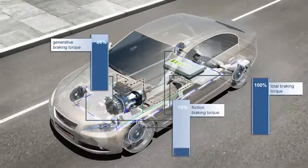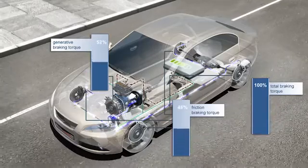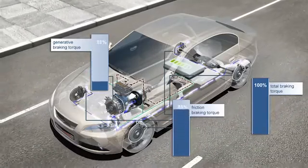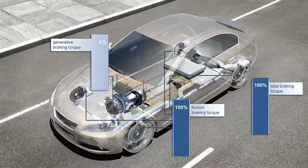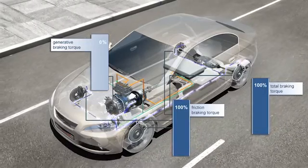To maintain the required deceleration, the braking torque from the friction brake is continuously adapted to the current generative braking torque, a process called torque blending.